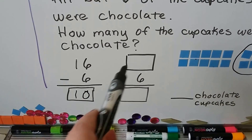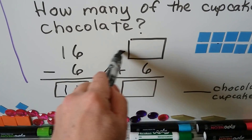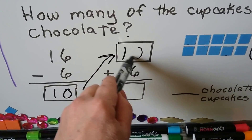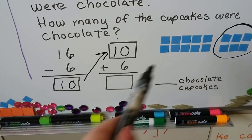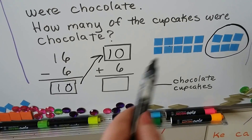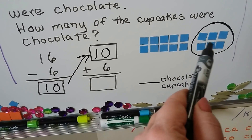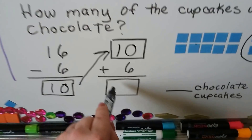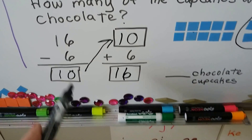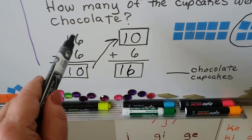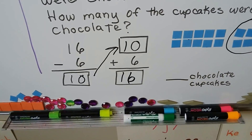The difference is going to be an addend — it moves up here. When we add ten plus six, counting on: ten, eleven, twelve, thirteen, fourteen, fifteen, sixteen. The sum is the same as the minuend, so we know we did our subtraction correctly.